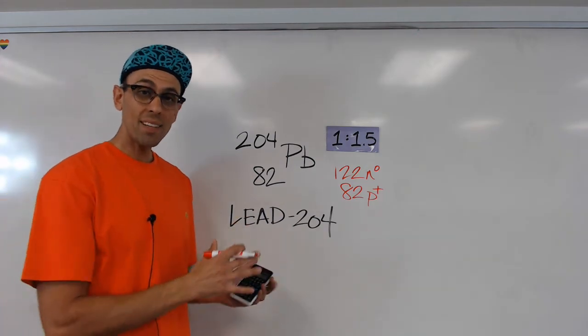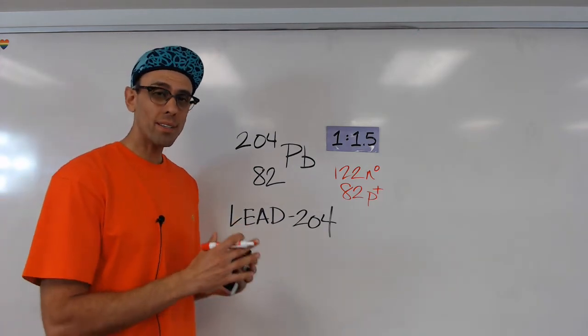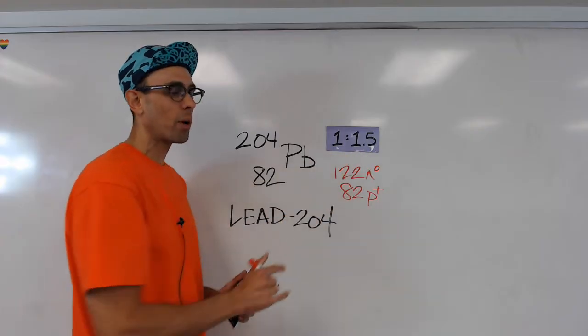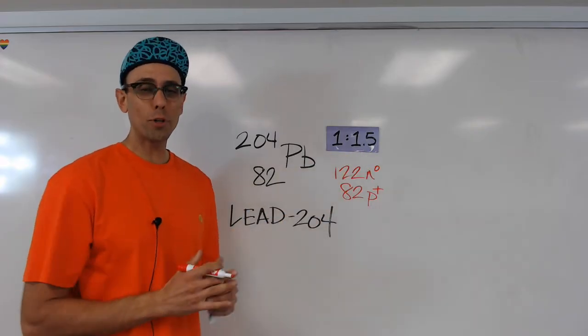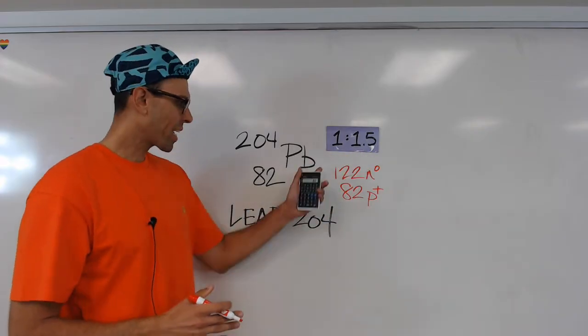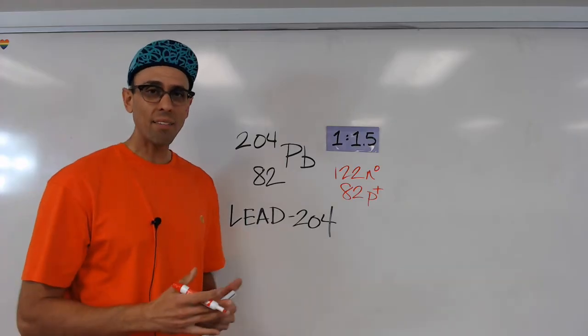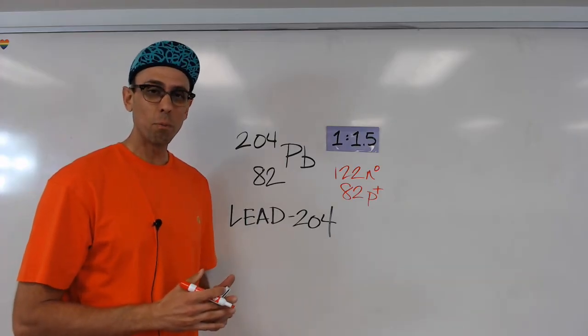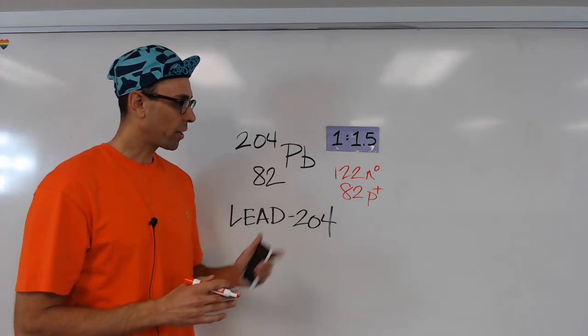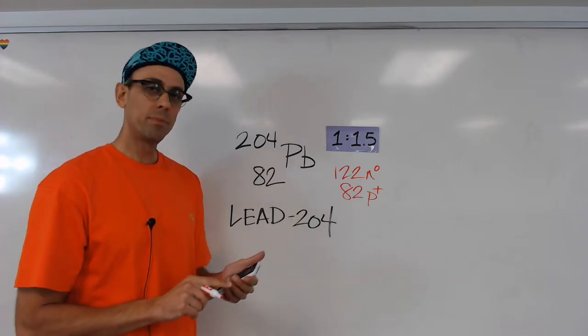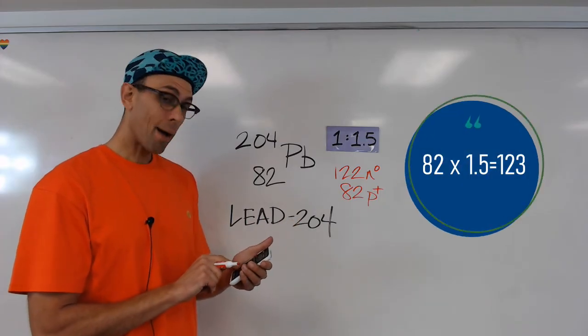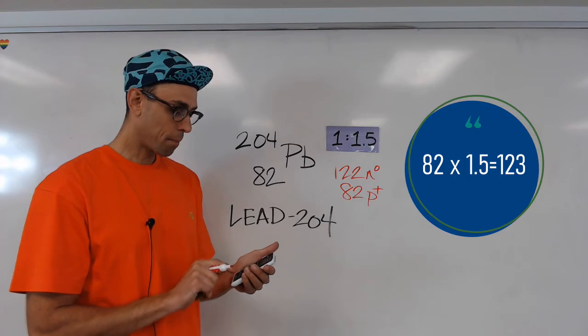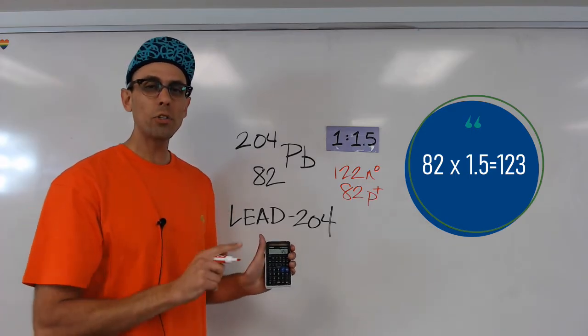Now because this is a larger atom, we want to see whether or not it meets the 1 to 1.5 ratio required for stability. Now looking at these numbers, it's not immediately obvious to me whether or not that's true. So I'm just going to use my calculator. And I'm going to take 82 and multiply it by 1.5. And I get 123.